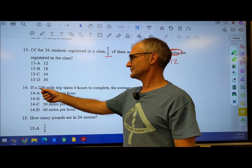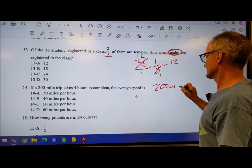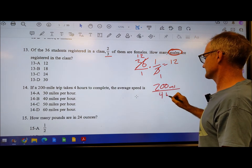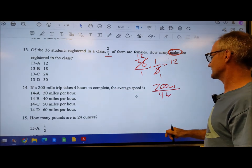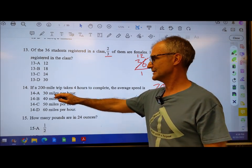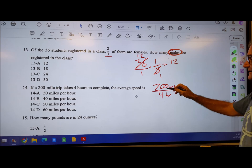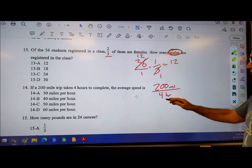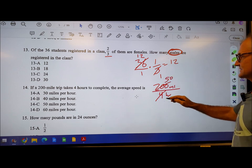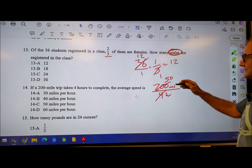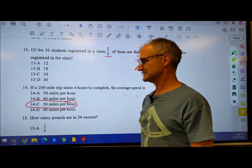Number 14, if a 200 mile trip takes four hours, what is the average speed in miles per hour? So I want miles per hour. I have 200 miles in 4 hours, so I just have to reduce this fraction. 4 goes into 4 one time, 4 goes into 200 fifty times. 50 over 1 is 50 miles per hour. Correct answer is 14C.